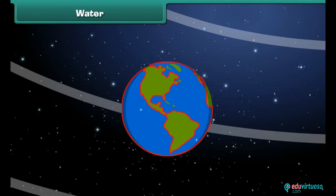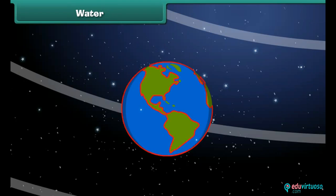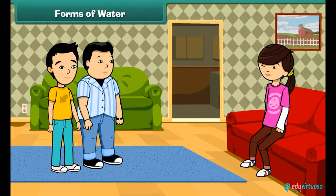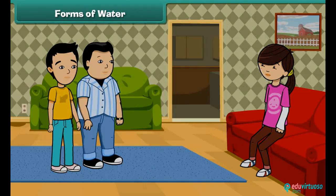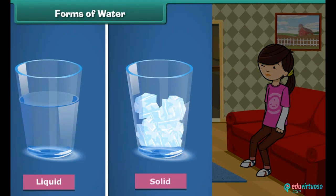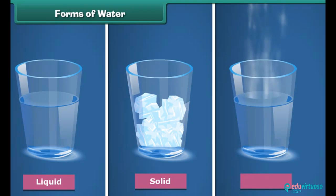Hello, sister. The entire planet looks blue when we see it from space. Now I will tell you about the different forms of water. Water exists in three forms: liquid, solid, and vapor.